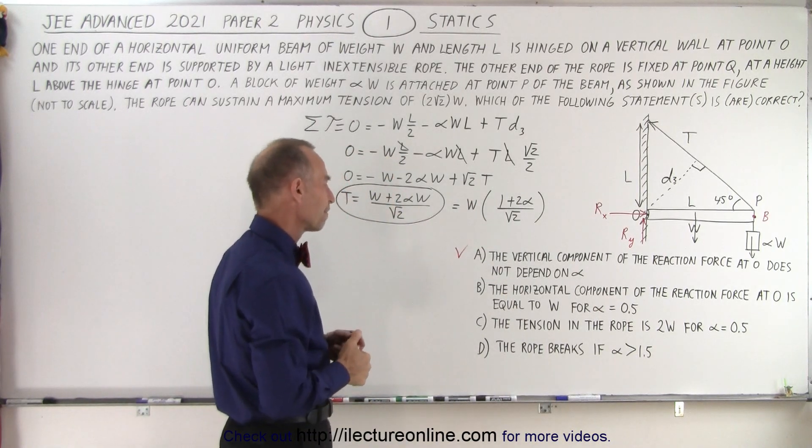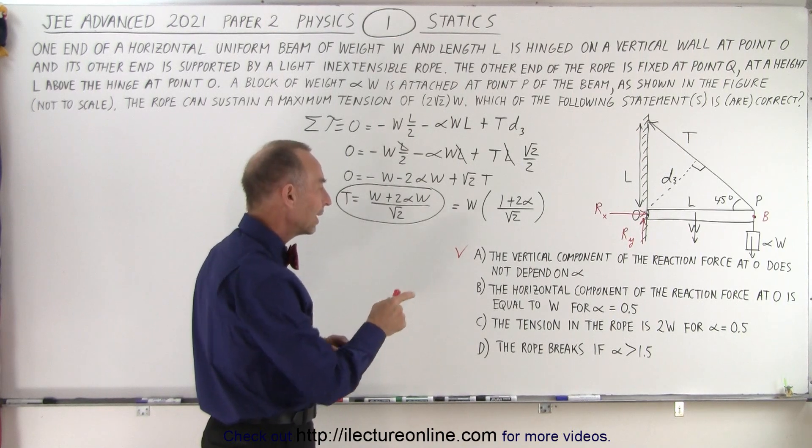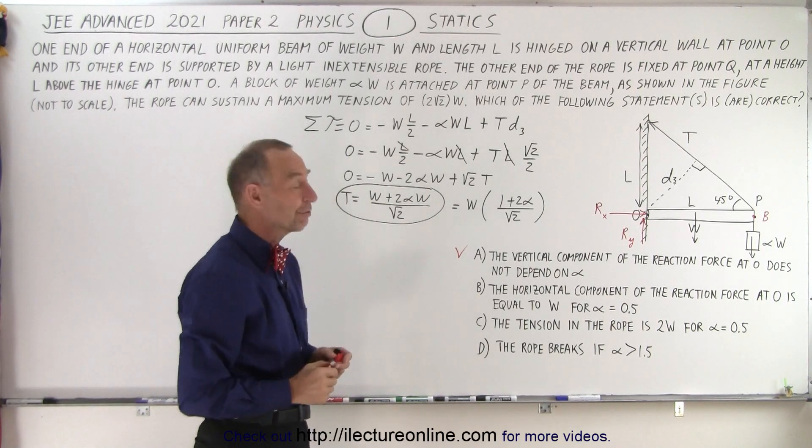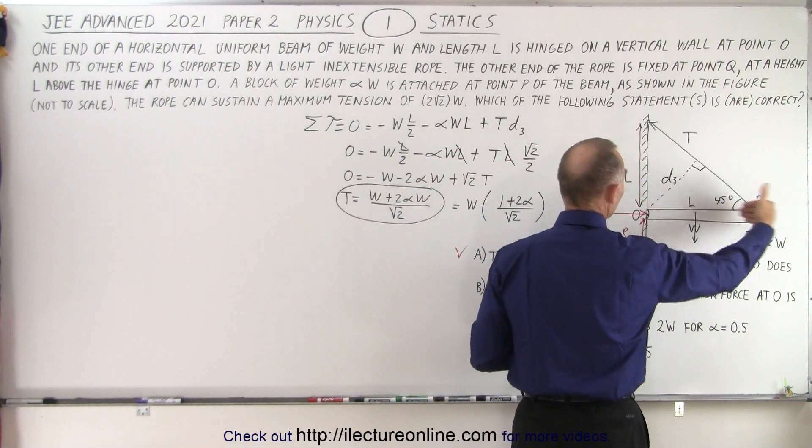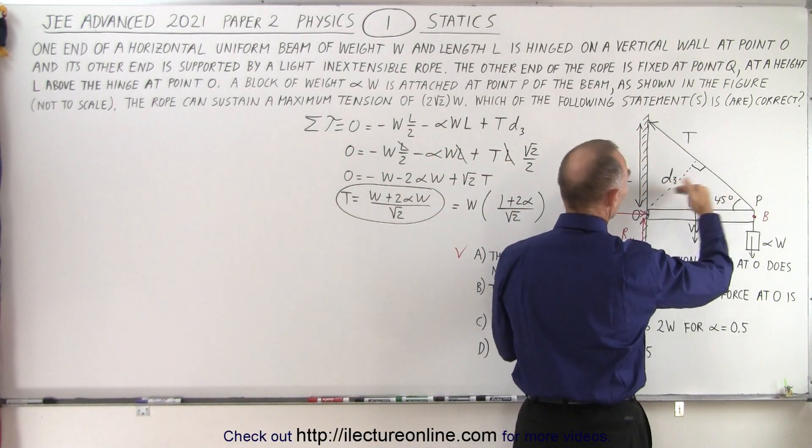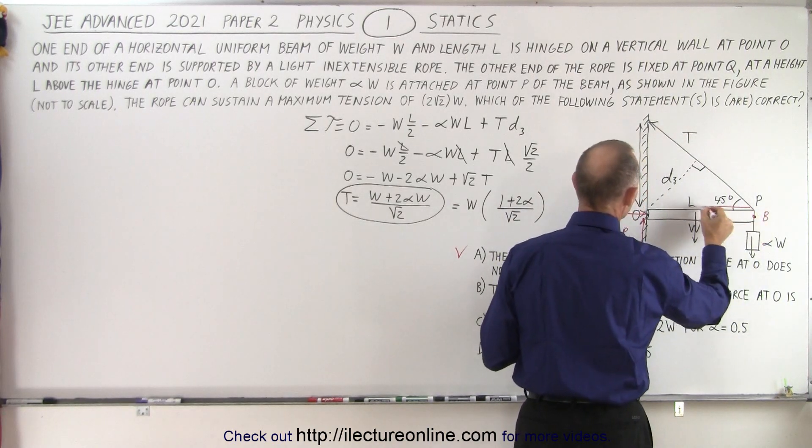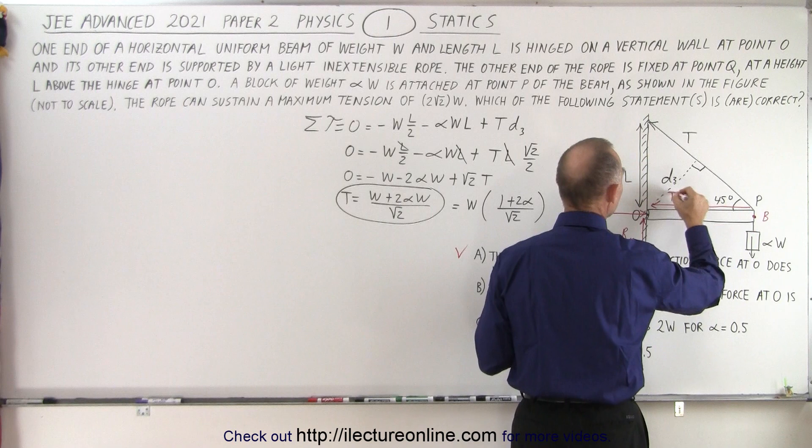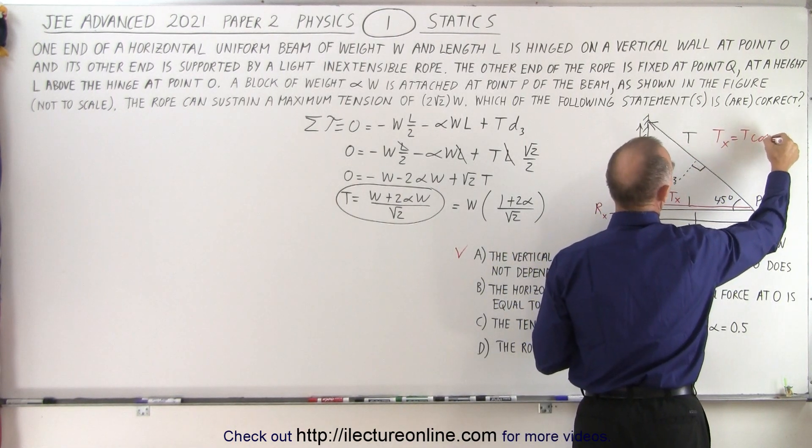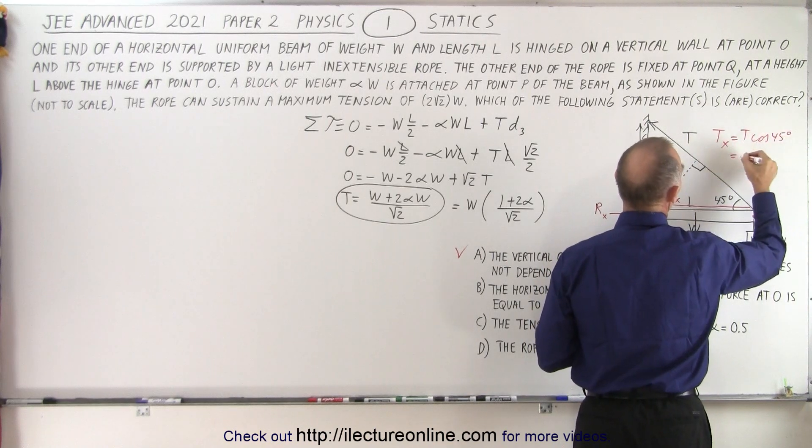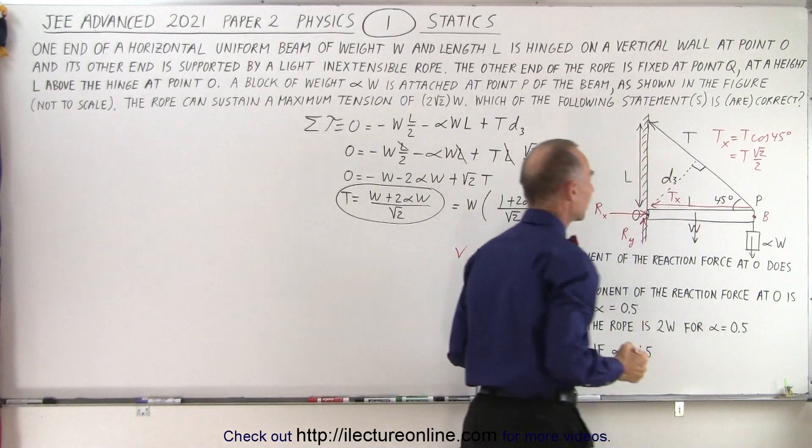How about B? The horizontal component of the reaction force at zero is equal to W if alpha is 0.5. Now you can see that the force pushing the beam in there would be the horizontal component of T. So this would be T in the x direction. T in the x direction is equal to T times the cosine of 45 degrees, which would be equal to T times the square root of 2 over 2.